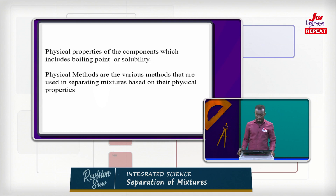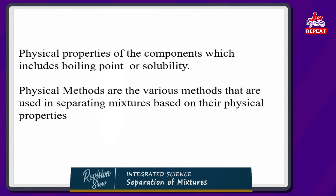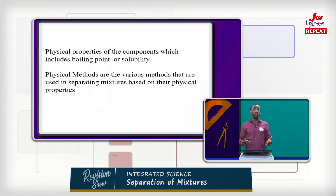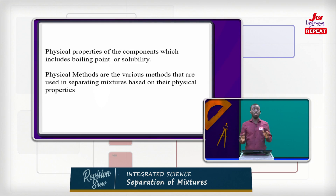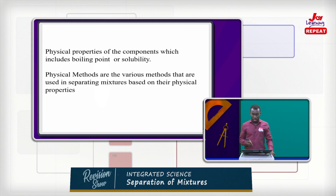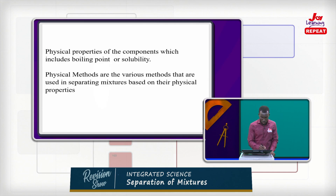This is dependent on the physical properties of the components, which include boiling point and solubility. Boiling point is talking about the temperature at which a solvent boils — for example, water boils at 100 degrees Celsius. Solubility is talking about how a solute will actually dissolve, either dissolve completely or partially dissolve in a solvent. Physical methods are the various methods used to separate mixtures based on their physical properties.